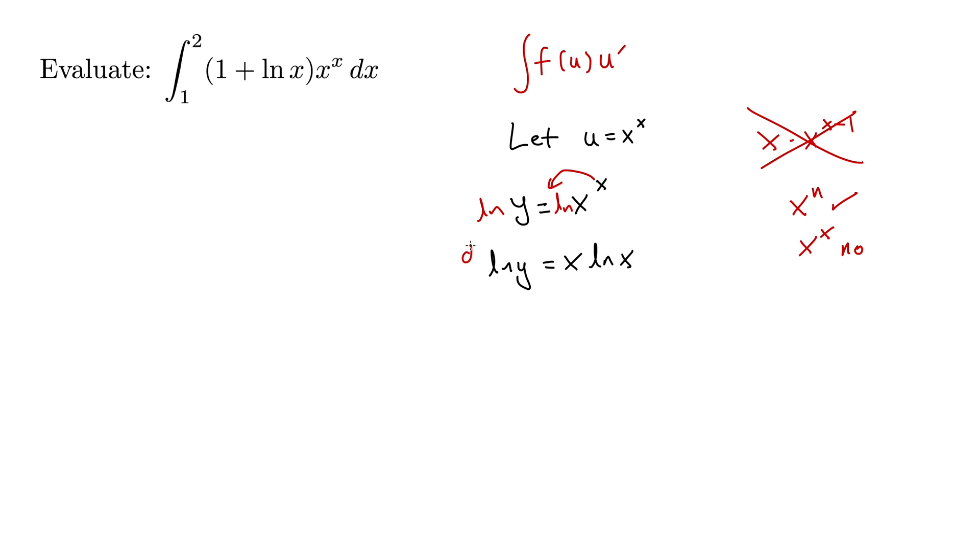We can now take the derivative of both sides, d by dx of both sides. On the left, one over y, y prime, that y prime is the chain rule of course. And then on the right we have x natural log x, so this is the product rule, a prime b plus b prime a. So there's our a and our b.